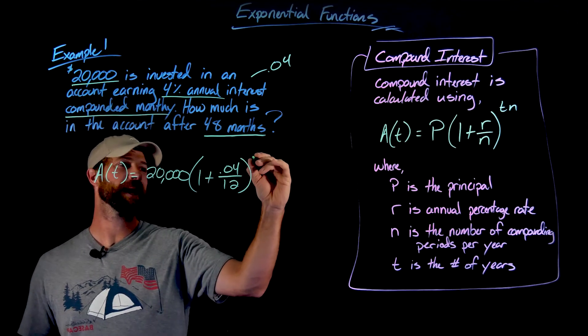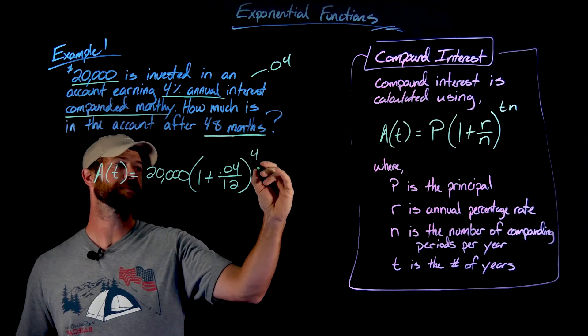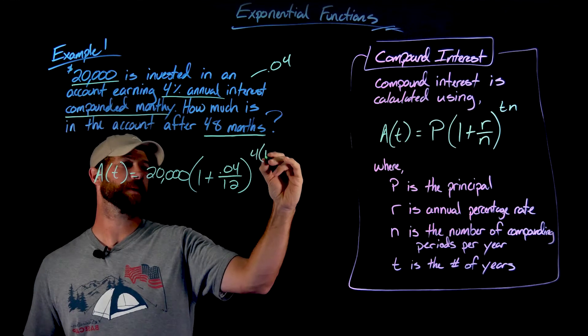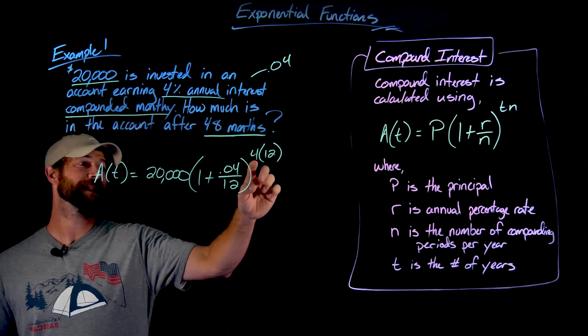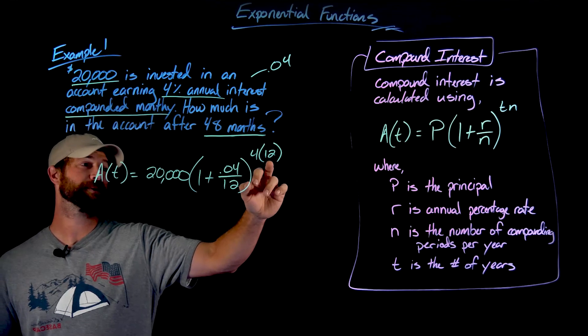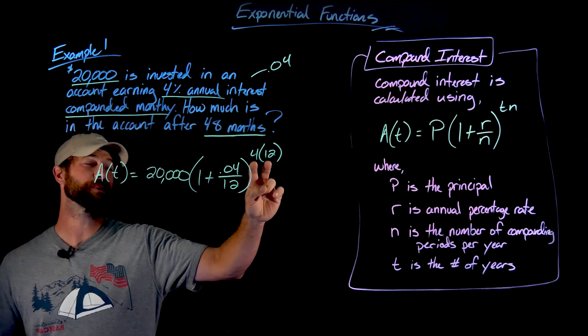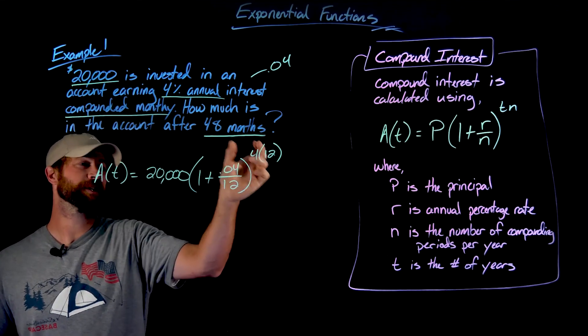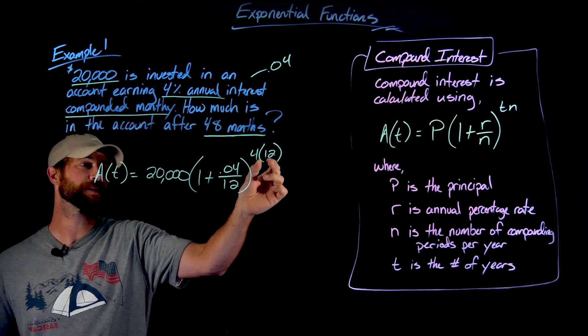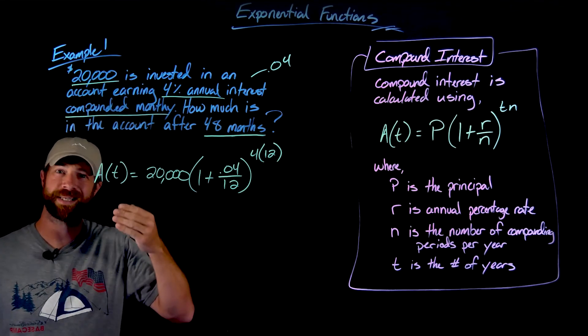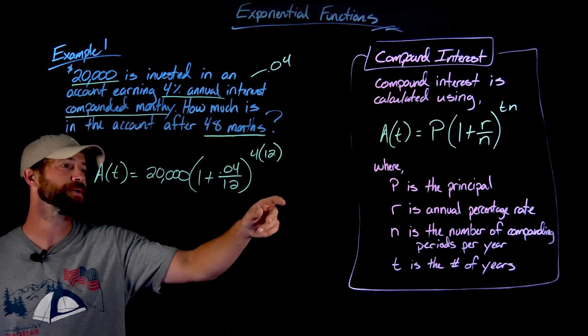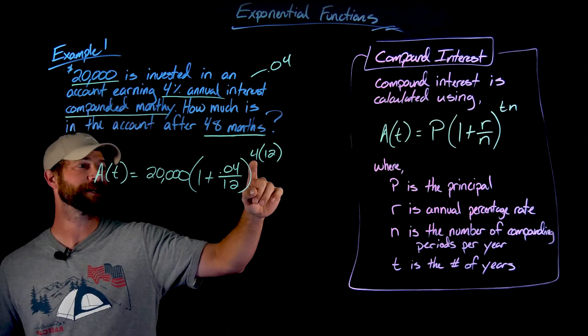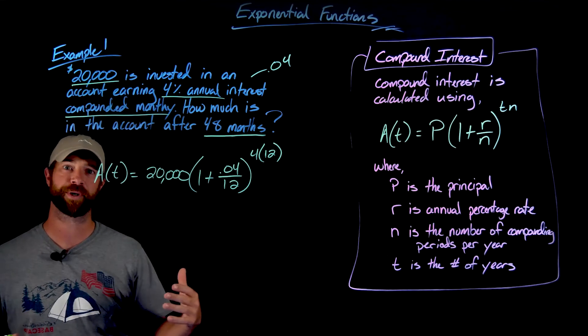And then for our exponent, we have the number of years, which is 4, times the number of times per year, which is 12. And importantly, then again, is that this is number of years times the compounds per year. But this is also equal to the 48. And I could have actually put that 48 in right here because always what this exponent is, is the number of compounding periods you have, though generally we'll always write it in the formula as years times the number of times per year.